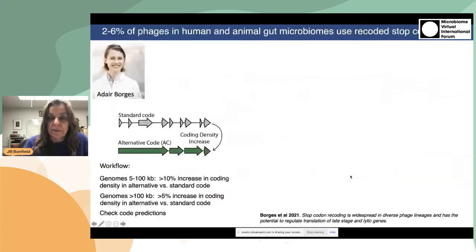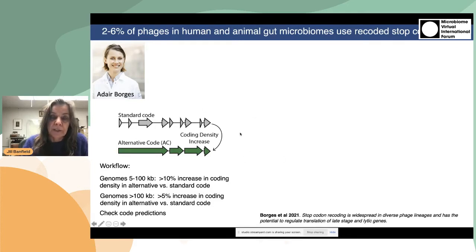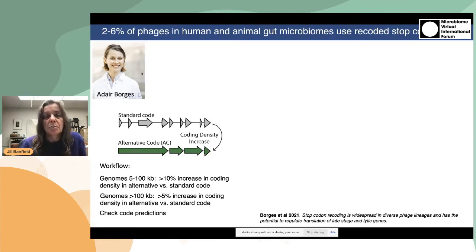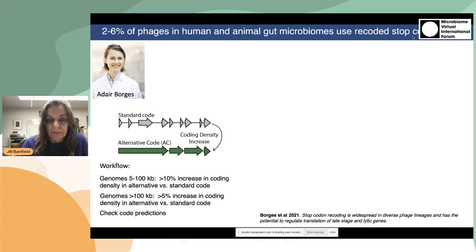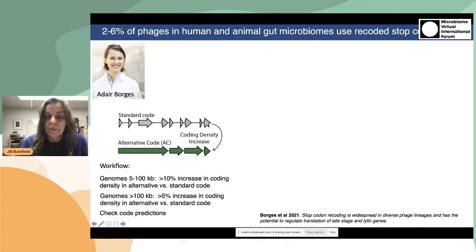This is work led by Adair Borges, covered in a recent preprint. In this work, she looked in as unbiased a way as possible to predict what percentage of phages in the human and animal gut microbiome use recoded stop codons — any stop codon that has been reassigned. She concluded that as much as 6% of the phages can use these alternative codes. The workflow looks for the situation where when you predict the genome with standard bacterial code 11, you get a very low coding fraction, but when you use an alternative code, you recover normal protein predictions.